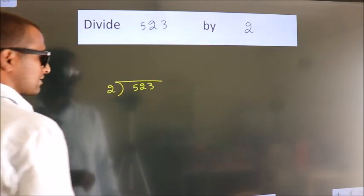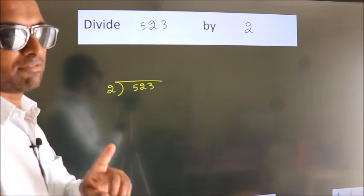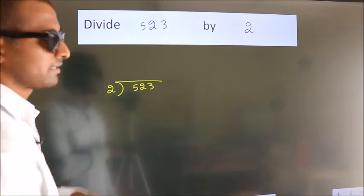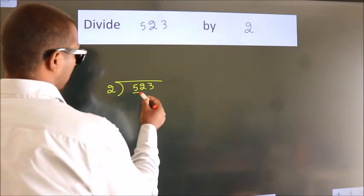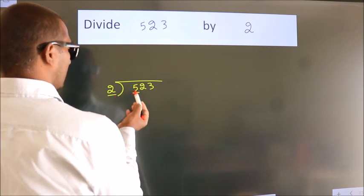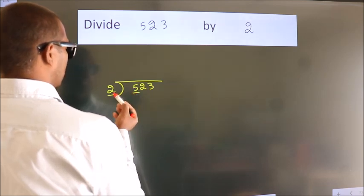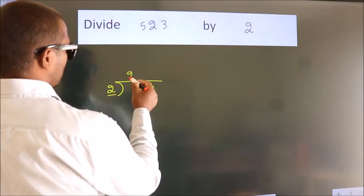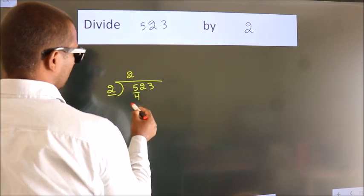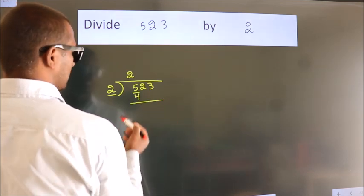This is your step 1. Next, here we have 5, here 2. A number close to 5 in 2 table is 2 2s, 4. Now, we should subtract.